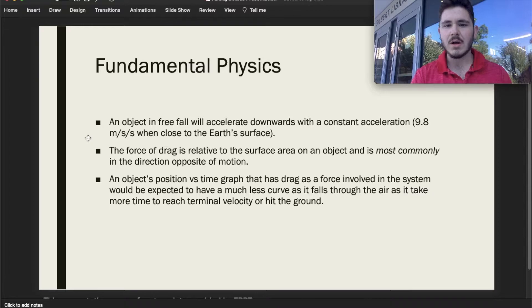To understand this, understanding free fall comes when it accelerates downwards with a constant acceleration, and when it's near the Earth's surface it's 9.8 meters per second squared. The force of drag is relative to the surface area on an object and it's most commonly in the direction opposite of motion, and in this case it is.